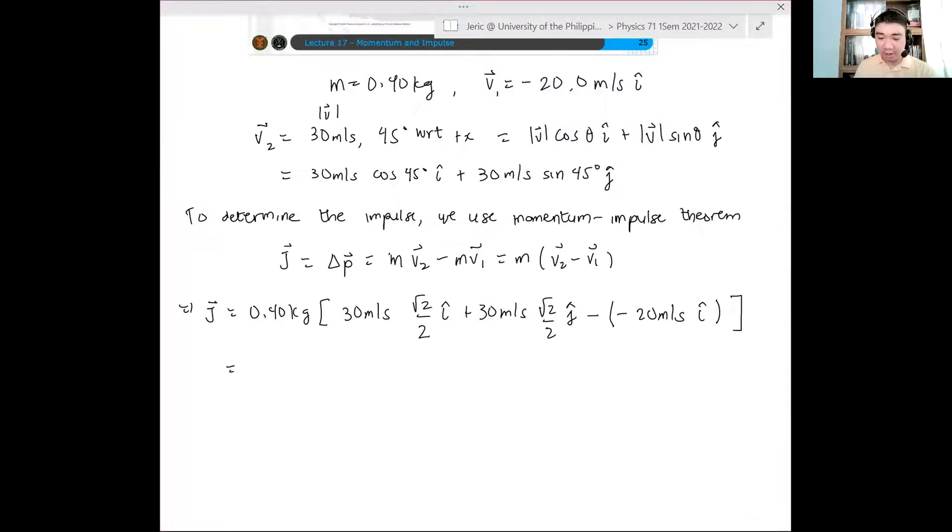0.4 times 30, square root of 2 over 2, 0.4 times the quantity 30 square root of 2 over 2, 30 times square root of 2 over 2, plus 20, which is just equal to what? This is equal to 16.5 i hat plus 8.46 j hat quantity kilogram meter per second. That is our impulse J.